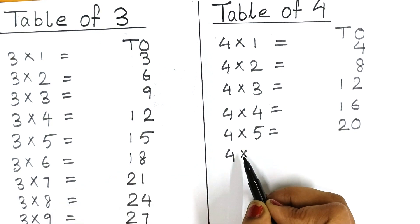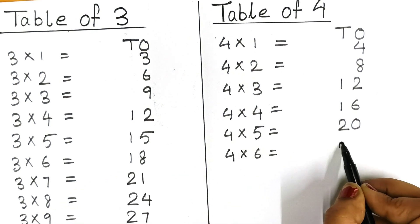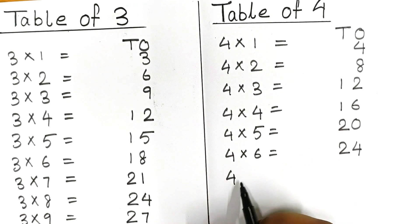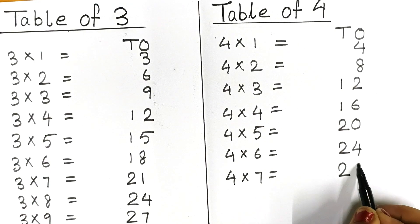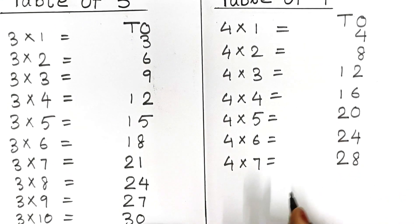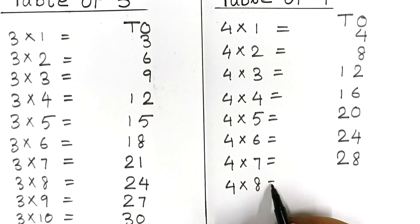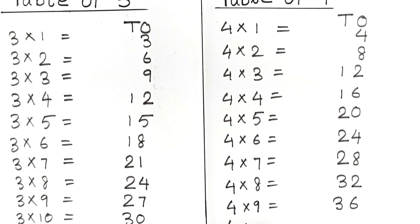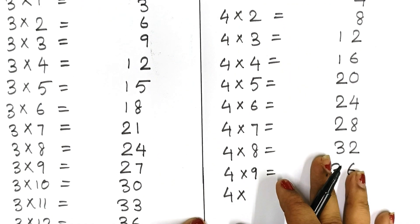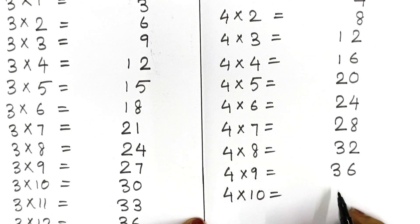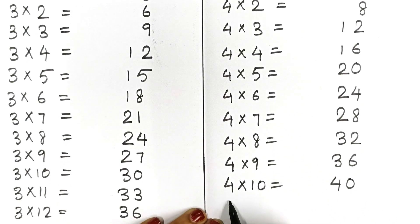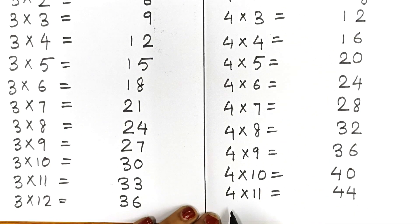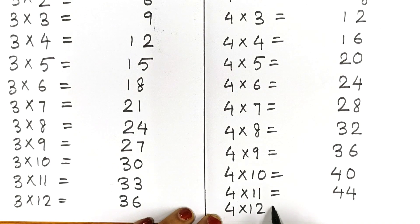Four six are twenty-four. Four seven are twenty-eight. Four eight are thirty-two. Four nine are thirty-six. Four ten are forty. Four eleven are forty-four. Four twelve are forty-eight.